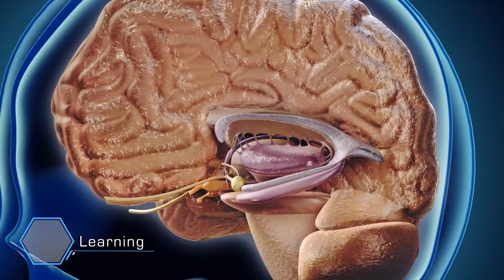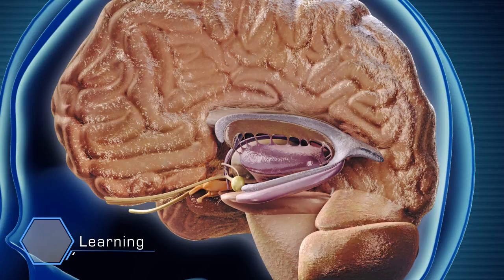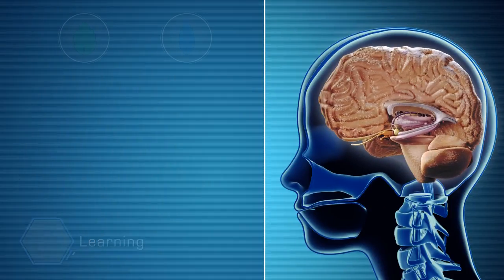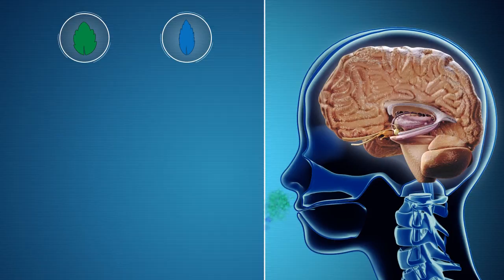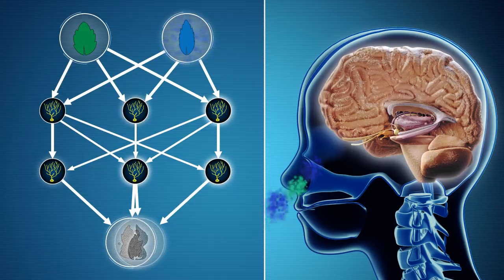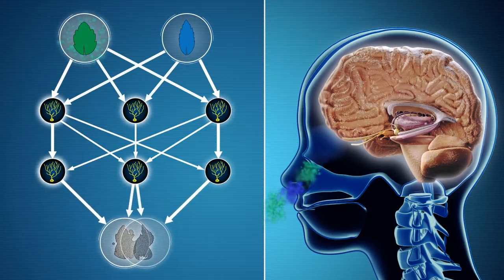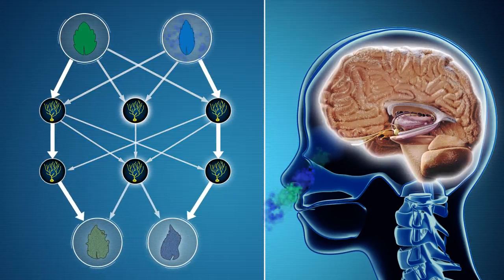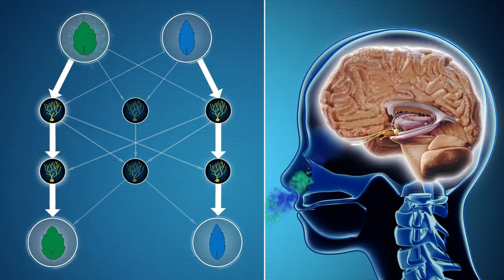The brain has a remarkable ability to learn how to discriminate between stimuli. When two sensory stimuli are very similar, an individual is at first unable to discriminate between them. However, with repeated experience, one is able to separate uncommon components from each stimulus.